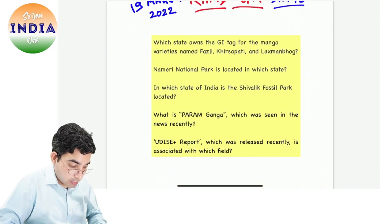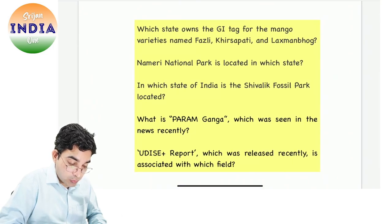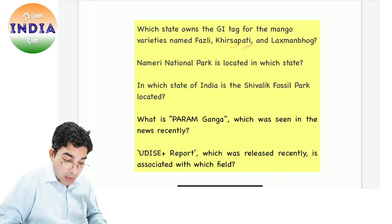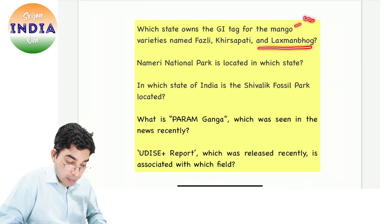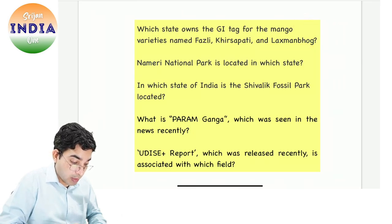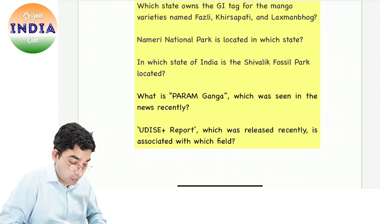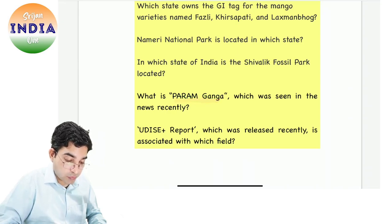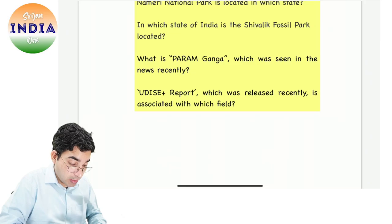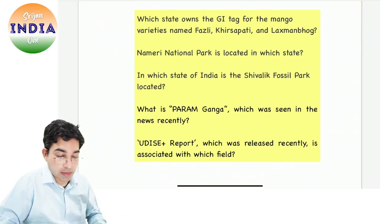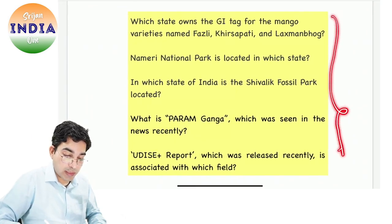Aaj ki vocabulary aur aaj ke sawaal hain. Which state owns the GI tag for mango varieties like Fuzzli, Kheerspati, Lakshman, and Bhog? Namiri National Park is located in which state? In which state of India is the Shivalik Fossil Park located? What is Paramganga, which was seen in the news recently? UDISE Plus report, which was released recently, is associated with which field? Ye chaar sawaal hain aaj ke liye.